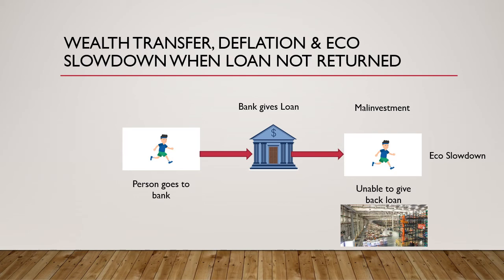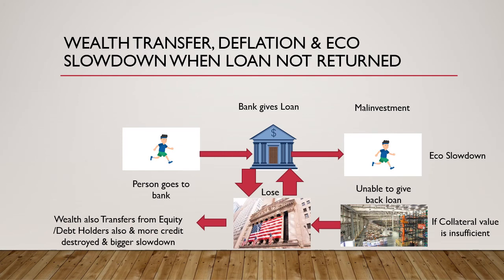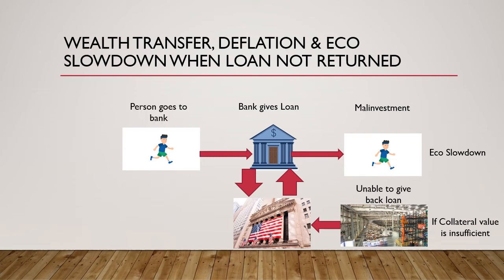In the second scenario, even the collateral value is insufficient for the banks to recover the loans. Enter the investors — they will start losing wealth, because here the bank has to issue more equity or in some cases debt to raise money to cover its losses on the balance sheet. This means more credit destruction takes place, which can lead to a bigger economic slowdown.